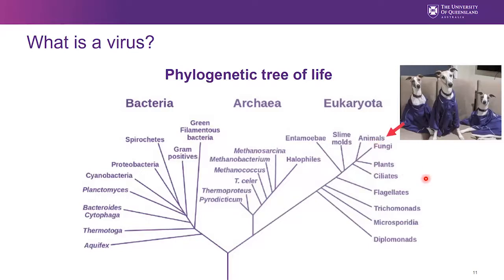There are also lots of other eukaryotic organisms. The animals you are very familiar with, including mammals and birds, are all eukaryotes. And these three here are my pets — my lovely dogs. I have three of them, and you can see that they also attend university at UQ.